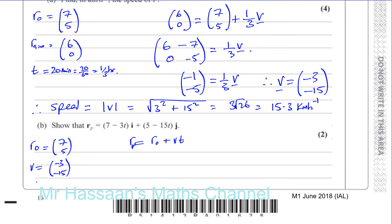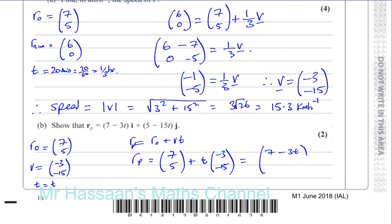So rp = (7, 5) + t(−3, −15). Combining components: the i component gives 7 − 3t and the j component gives 5 − 15t. So rp = (7 − 3t)i + (5 − 15t)j, exactly as required. That's part b.